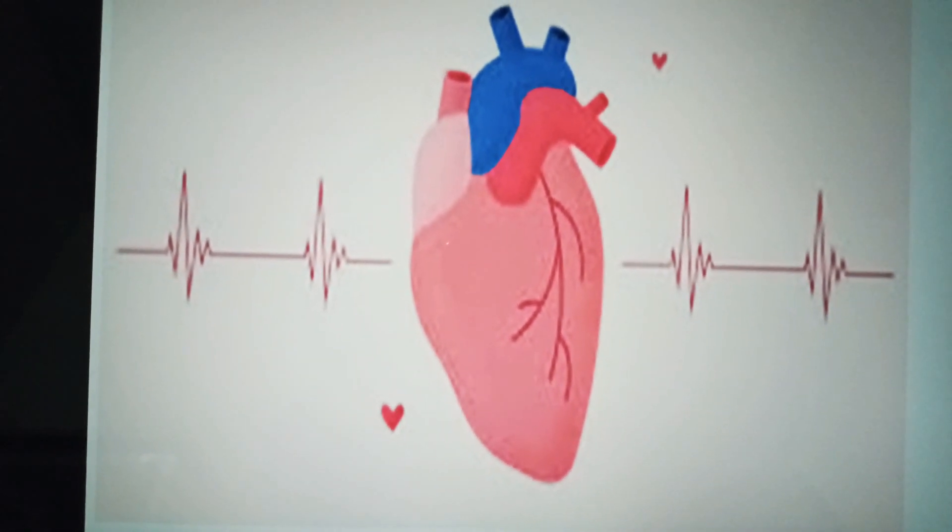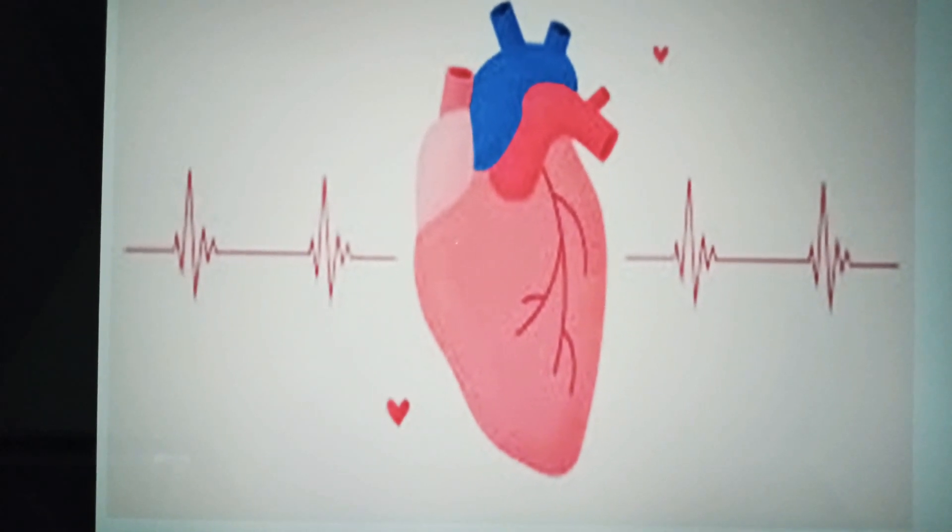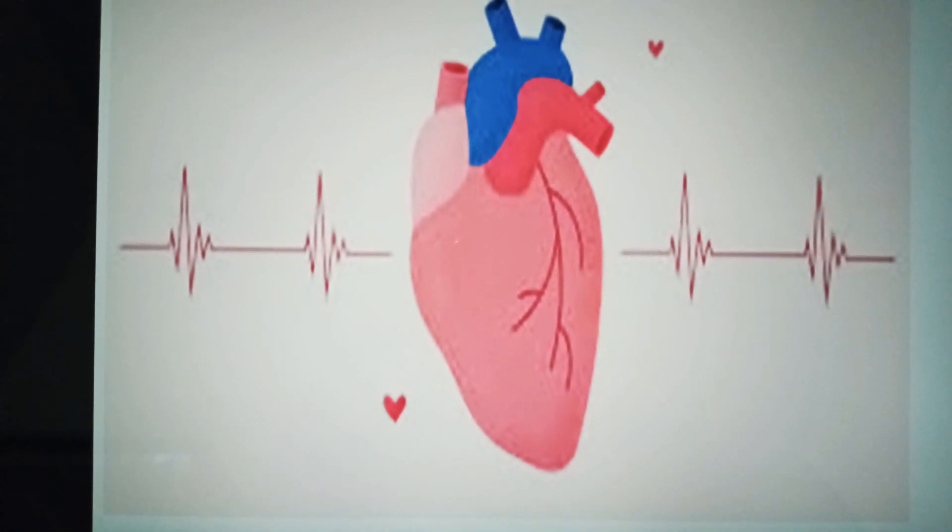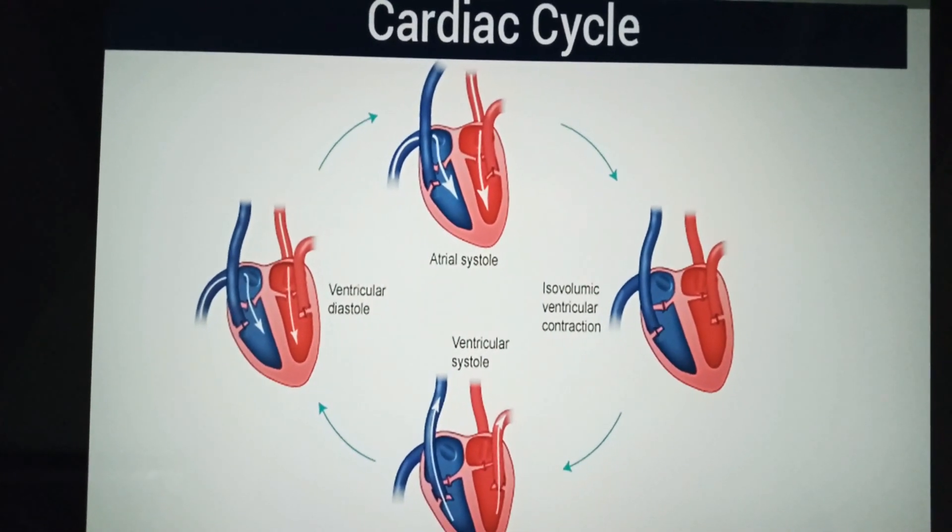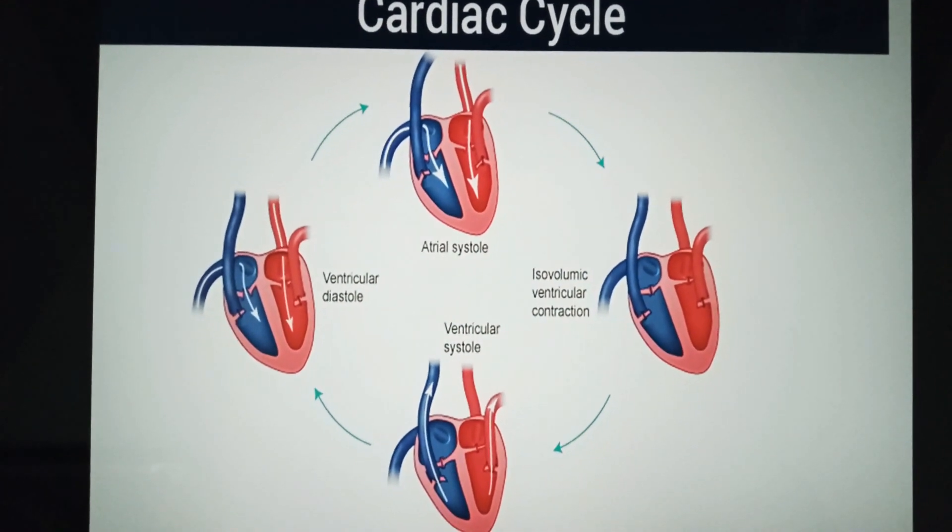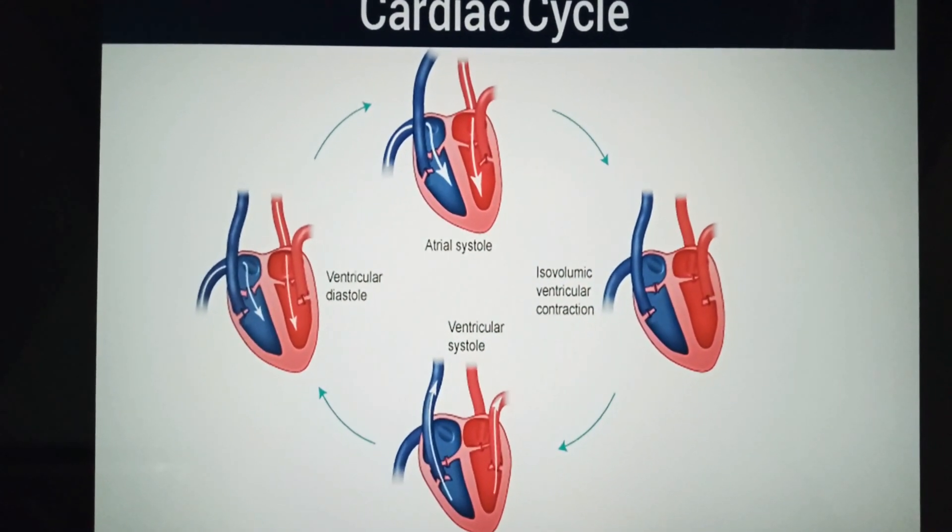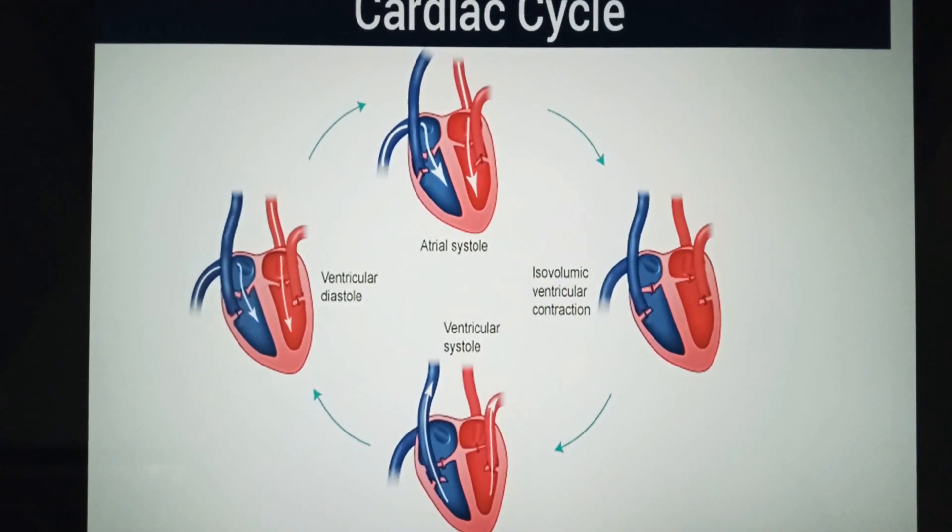The relaxation of heart chambers fills them with blood, and contraction of chambers propels blood out of them. The alternating relaxations and contractions make up the cardiac cycle, and one complete cycle makes one heartbeat.